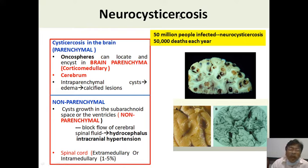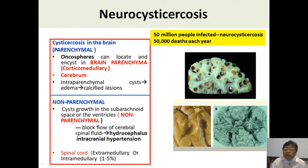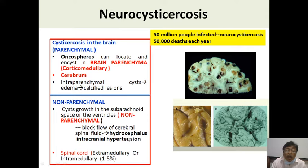Neurocysticercosis can involve brain parenchyma, ventricles, basal cisterns, sulci, and gyri. It is divided into parenchymal and non-parenchymal forms. The oncosphere localizes and encysts in the brain parenchyma mostly in corticomedullary areas and cerebrum. Non-parenchymal cysts grow in the subarachnoid space or ventricles, blocking CSF flow — hydrocephalus is a frequent complication. Spinal cord involvement occurs in 1-5% of cases.